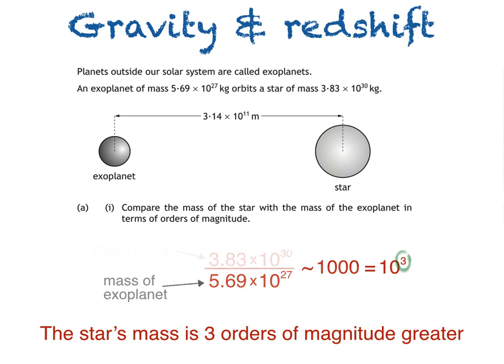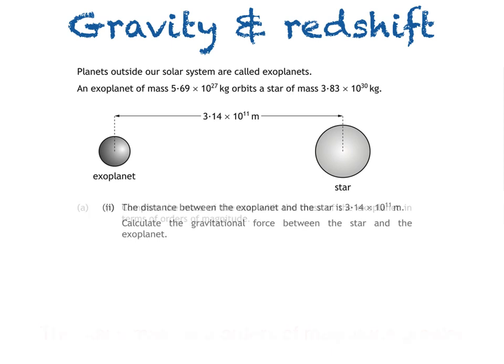On to part 2 then. The distance between the exoplanet and the star is 3.14 times 10 to the power of 11 metres. Calculate the gravitational force between the star and the exoplanet. The equation we're looking for is F = GM₁M₂/R². G is known as the universal constant of gravitation and can be found in the data sheet at the front of the exam. M1 and M2 are the masses of the exoplanet and star.